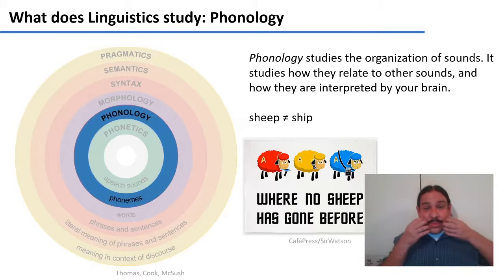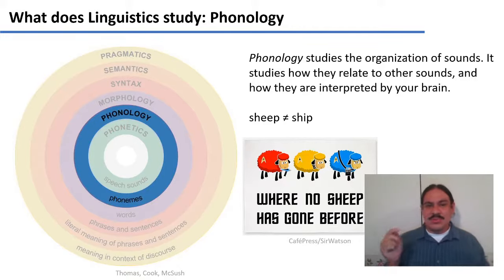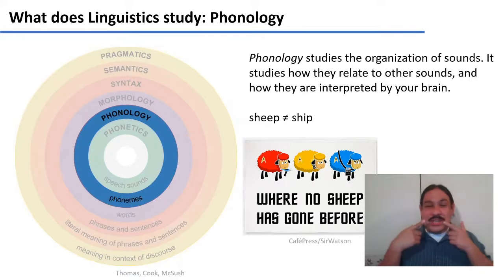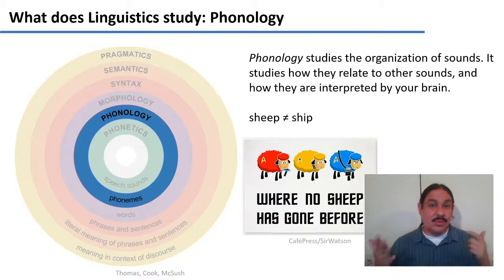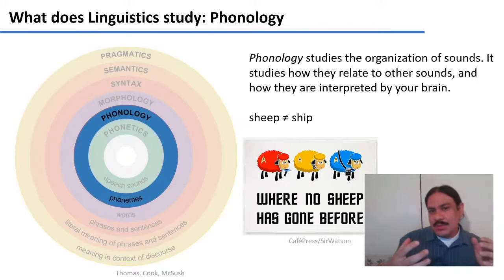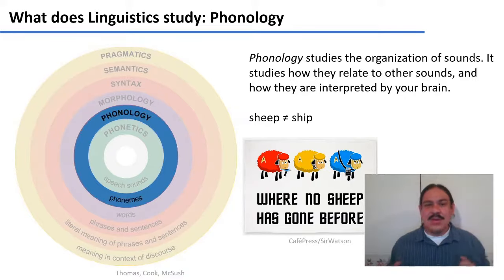Phonology studies how those sounds are organized in your brain. It studies the fact that you feel like there's just one difference between words like 'sheep' and 'ship' — you feel like there's one component that changed, the vowel, the sound in the middle: sheep, ship. You're not thinking about how your tongue changed; you just feel like there's one difference in your brain. This kind of pair is called a minimal pair. This also relates to intuitions like why 'frock' is not a word in English — these phenomena are studied in phonology.